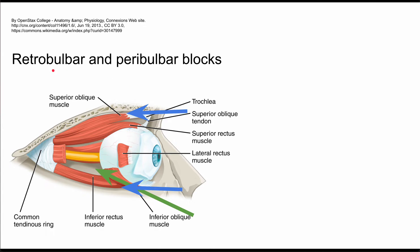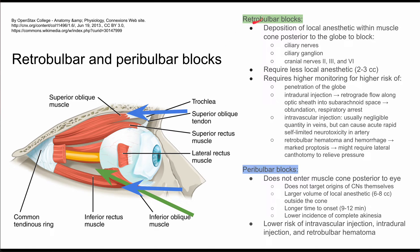This is an overview of the retrobulbar and the peribulbar blocks. These are two regional anesthetic techniques used for ophthalmology procedures. The pros and cons of these procedures are listed here on the right, and they both allow you to have some level of akinesis and anesthesia to the eye. The retrobulbar block is shown in the green arrow, going behind the eye. The peribulbar blocks are shown in the blue arrows, going above and below the eye.